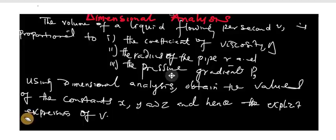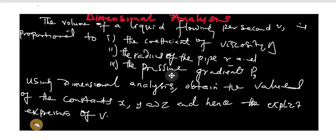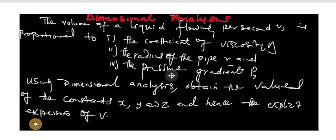Hi guys, welcome to this class. In today's video we shall be looking at a problem on dimensional analysis. The volume of a liquid flowing per second, V, is proportional to: the coefficient of viscosity, the radius R, and the pressure gradient. Using dimensional analysis, obtain the values of the constants X, Y, and Z, and hence the explicit expression of V.